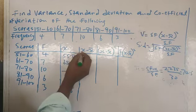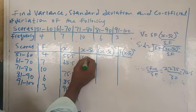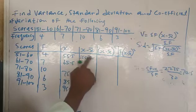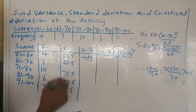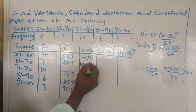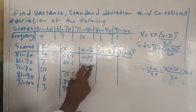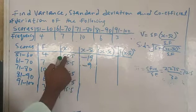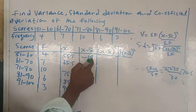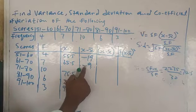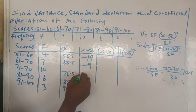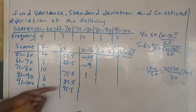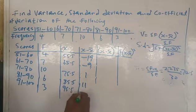Now we compute x minus mean for each row. 55.5 minus 74.5 gives minus 19. 65.5 minus 74.5 gives minus 9. 75.5 minus 74.5 gives 1. 85.5 minus 74.5 gives 11. 95.5 minus 74.5 gives 21. Please use your calculator.